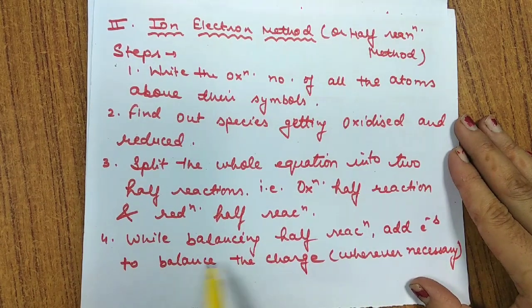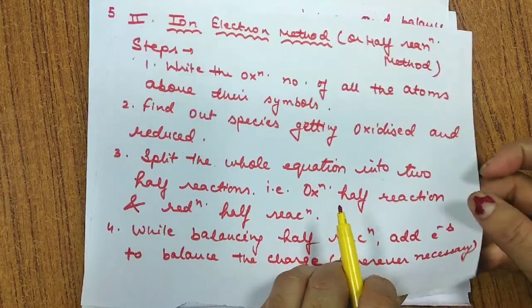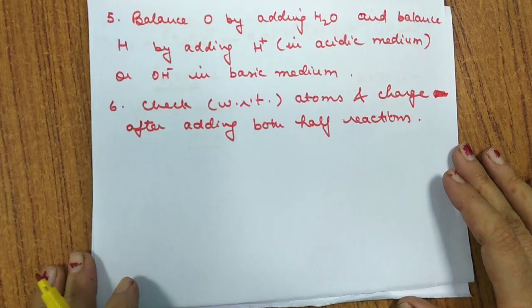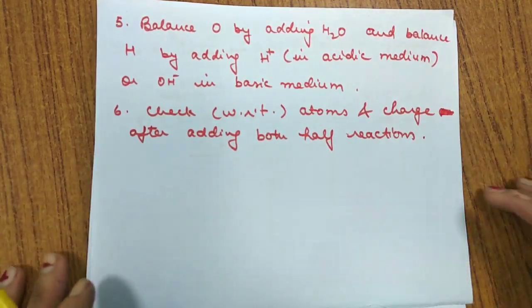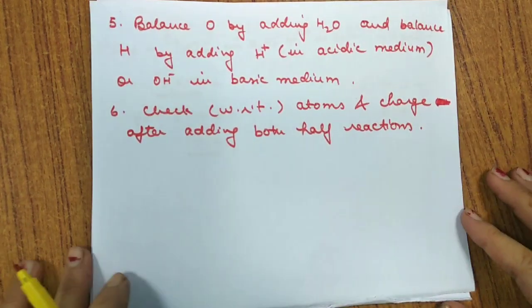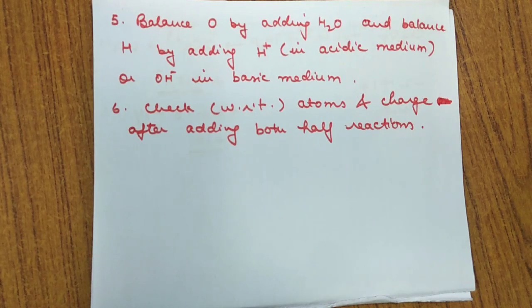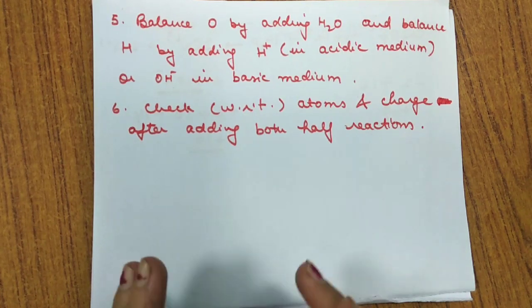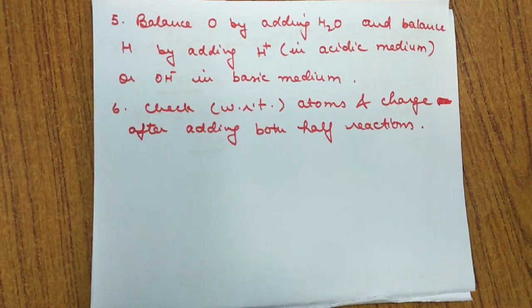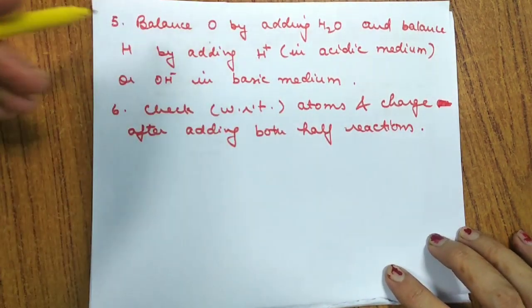While balancing each half reaction, we need to add electrons to balance the charge. In an oxidation reaction, there is loss of electrons. Where there is more negative charge, we add electrons to the opposite side. Where there is more positive charge, we add electrons to that same side.